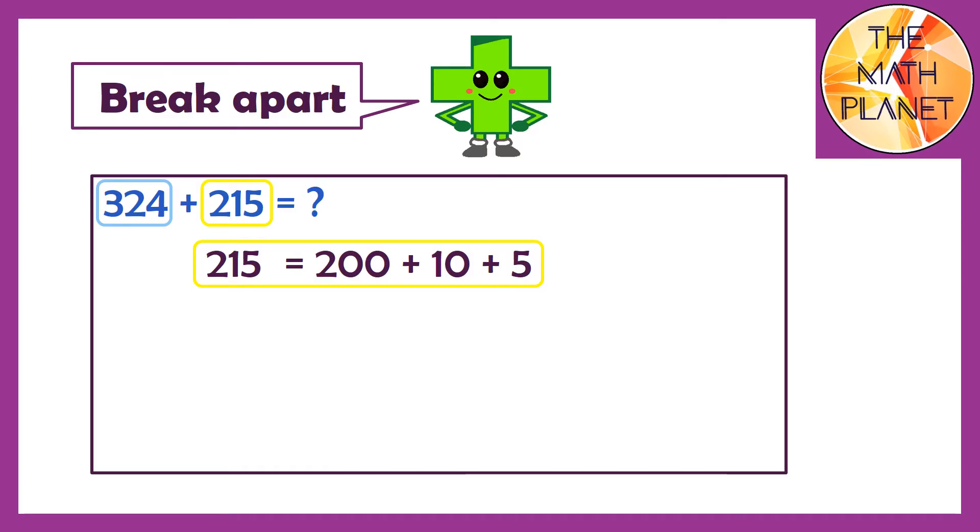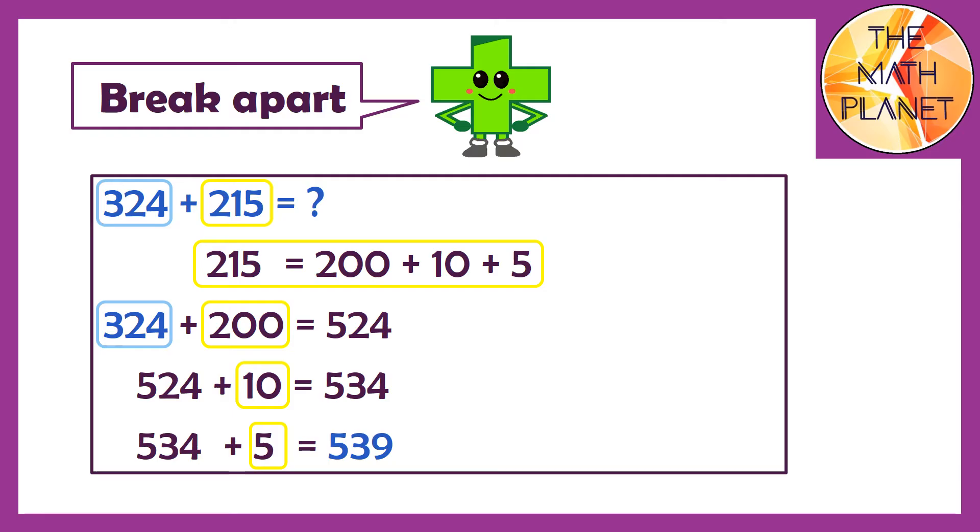First, 324 plus 200 will give me 524. When I add 10 more, it will be 534. Then I'll add 5 more to get the sum which is 539.